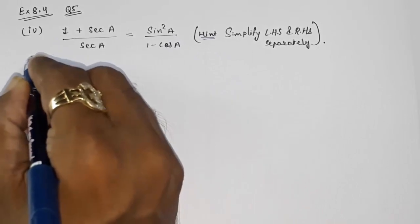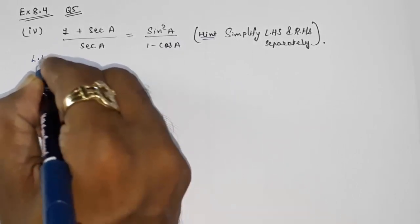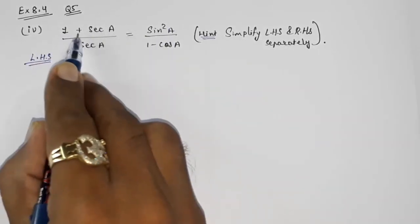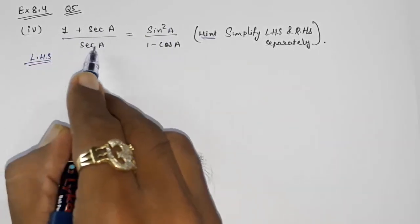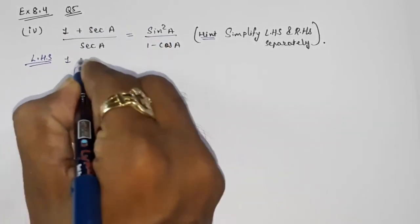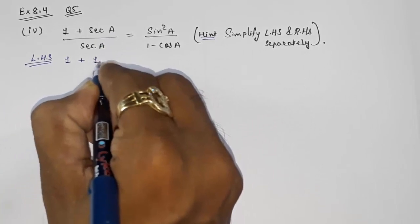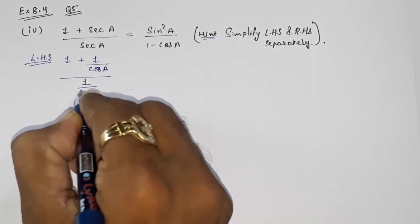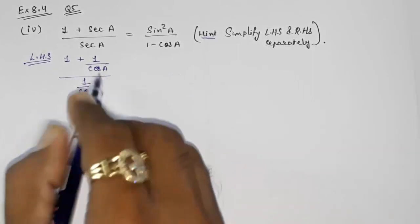So let us start with LHS. Now we want this answer in sin and cos, so we can convert this sec into cos: 1 plus sec, that is 1 by cos A upon 1 by cos A.